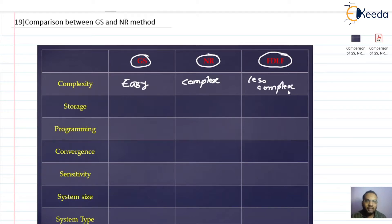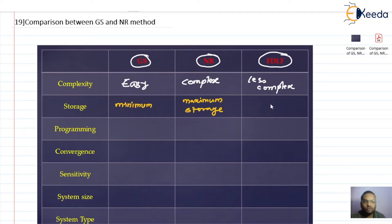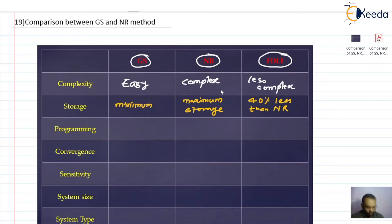Next, regarding storage requirements: the Gauss-Seidel method requires minimum storage. The Newton-Raphson method, as mentioned when we first discussed it, has maximum storage requirements as its disadvantage — maximum storage is required.